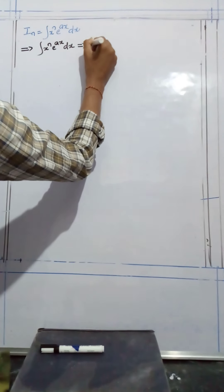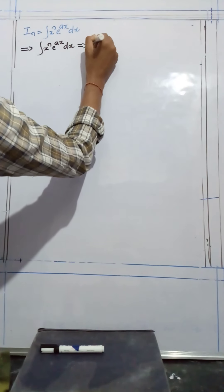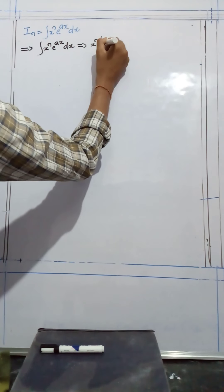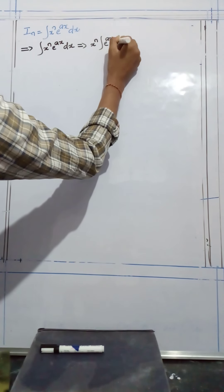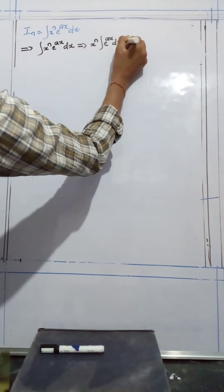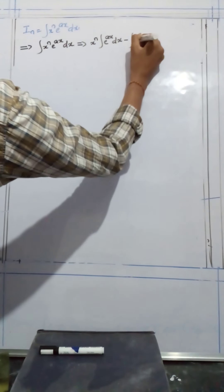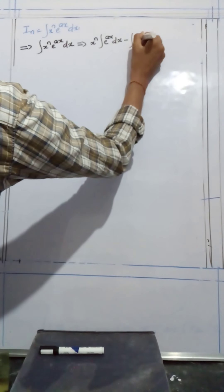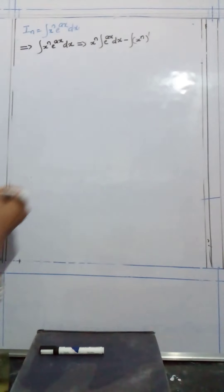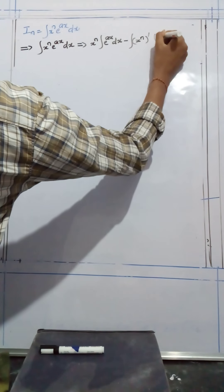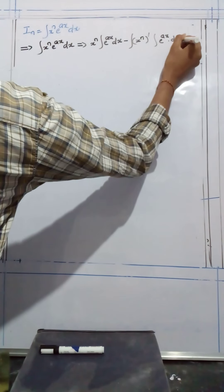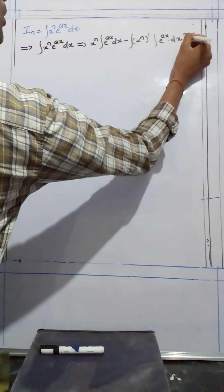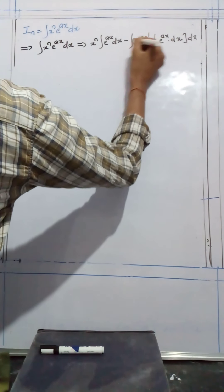Therefore, the formula is: first function multiplied by the integral of the second function, minus the whole integral of the derivative of the first function times the integral of e to the power of ax, dx.